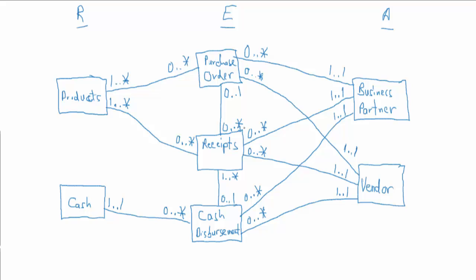So we've got our basic model with multiplicities assigned. Now let's see what we can add to it. For one thing, we know that our organization does not accept partial shipments. So in this case, we can basically collapse our purchase order and receipt into one class — the purchases — handling both the purchase and receipt of goods in one event.